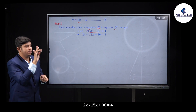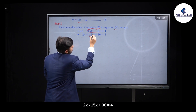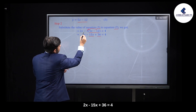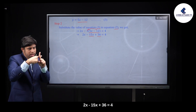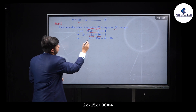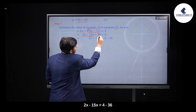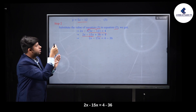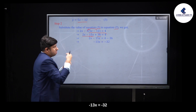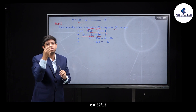Expanding: 2x minus 15x plus 36 is equal to 4. Simplifying: 2x minus 15x is equal to 4 minus 36. Therefore minus 13x is equal to minus 32. Finally, x is equal to 32 by 13.